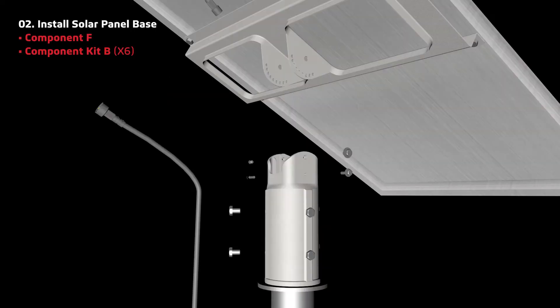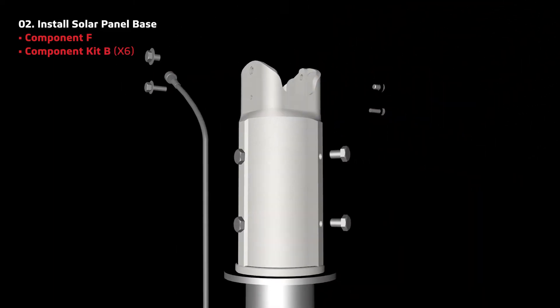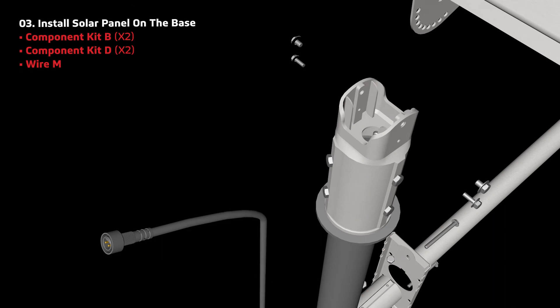Secure component F with the screws from component kit B, and feed wire M through the top of the pole.